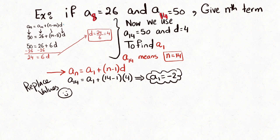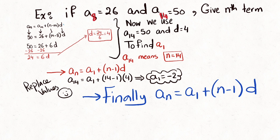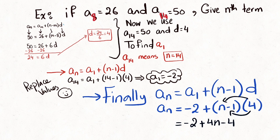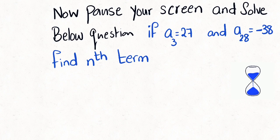Now we have a1, d, and a_n. All that's left is to find the n value by replacing everything and simplifying. For the coming example, pause your screen, solve the equation, and compare your answer with mine.